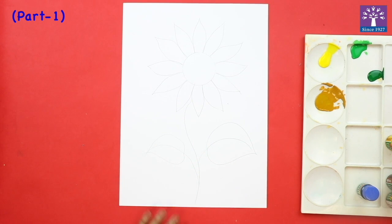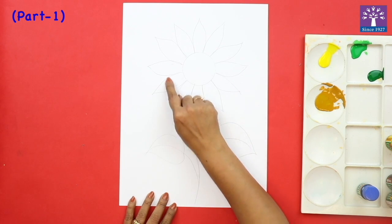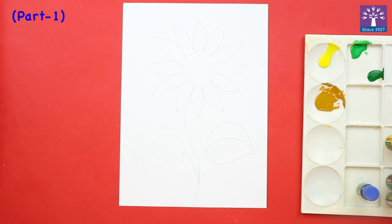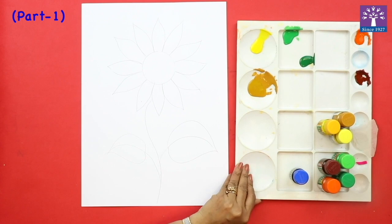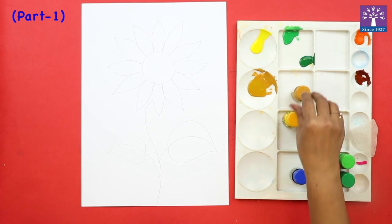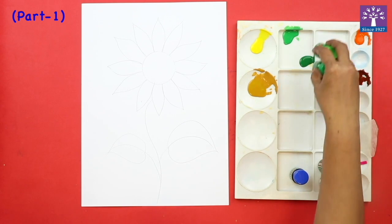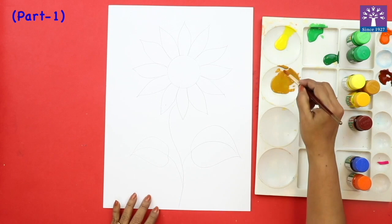Paint the sunflower in different shades of yellow. We are going to paint all these petals in different shades of yellow. Here you can see that I have kept some paints ready in my palette. Lemon yellow, chrome yellow, ochre yellow. I have also kept two shades of green ready. So first we are going to start with a dark shade.